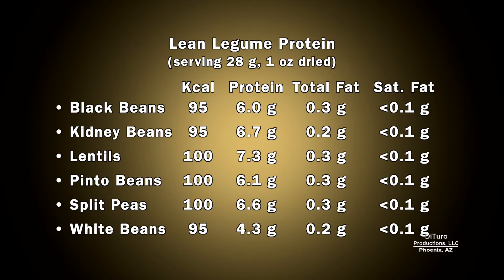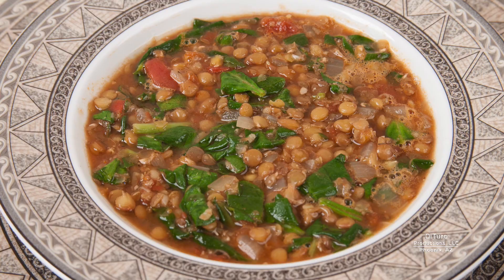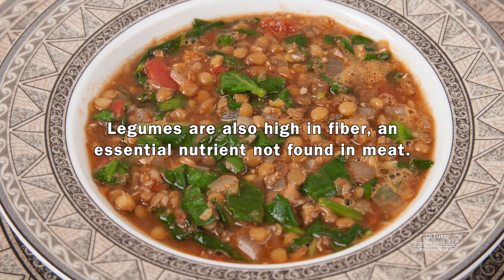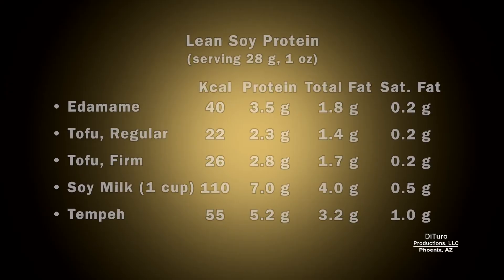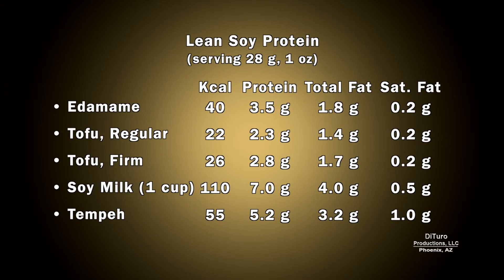Just one ounce of dry beans and lentils have up to seven grams of protein, the equivalent of one large egg white. Legumes are also high in fiber, an essential nutrient not found in meat. Soy products are high in protein and low in calories, total fat, and saturated fat.